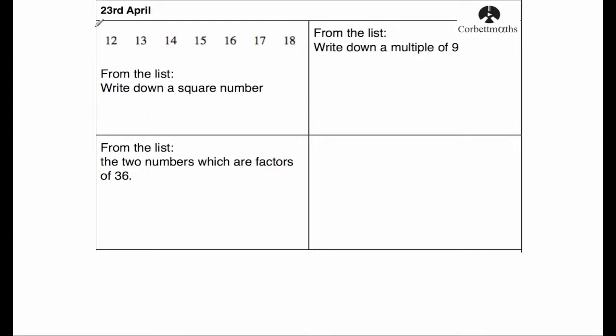Well, 3 times 3 is 9, 4 times 4 is 16, and 5 times 5 is 25, so the only option available to us is 16.